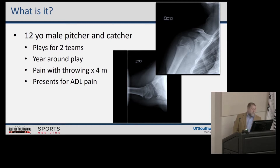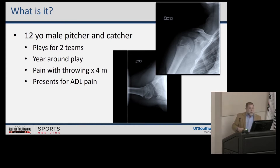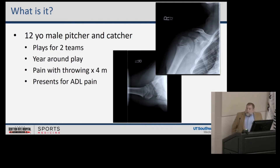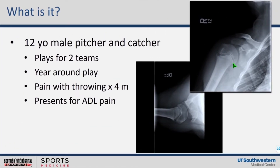He plays for two teams, plays year-round, and has had pain with throwing for four months. He initially had just a little pain with throwing, but now has pain when he's not throwing — pain with ADLs and just lifting his arm. On x-rays we can see fragmentation at the anterolateral aspect of the growth plate, widening of the growth plate with almost a ground glass appearance on the AP view, and on the cross-table view, tremendous widening with actual rotation — this kid is on the severe end of the bell curve.